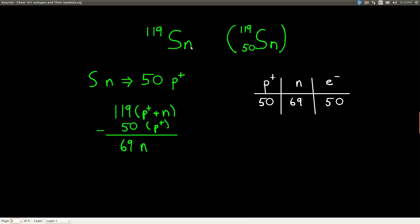For example, let's look at this isotopic symbol. Sn is tin and we would call this tin-119. What do we know about this? Well, we know that because it's tin, we can look up on the periodic table and see that it has 50 protons.